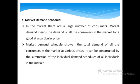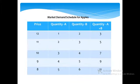The next part is the market demand schedule. In the market there are a large number of consumers. Market demand means the demand of all consumers in the market for a good at a particular price. The market demand schedule shows the total demand of all consumers at various prices. It can be constructed by the summation of the individual demand schedules of all individuals in the market. This table shows the market demand schedule for apples.